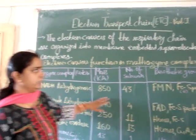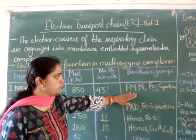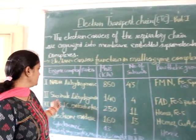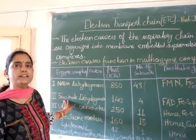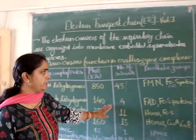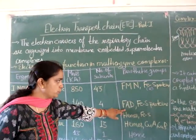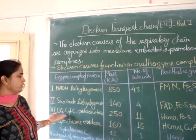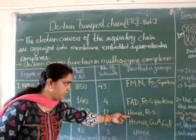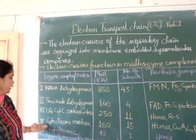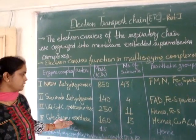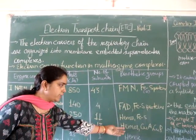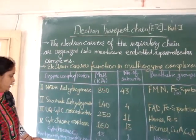In Complex I, the prosthetic groups are FMN and iron-sulfur proteins. In Complex II, the succinate dehydrogenase complex, the prosthetic groups are FAD and iron-sulfur proteins. In Complex III, the prosthetic groups are hemes and iron-sulfur proteins. In Complex IV, the prosthetic groups are hemes and copper ions (Cu-A and Cu-B).